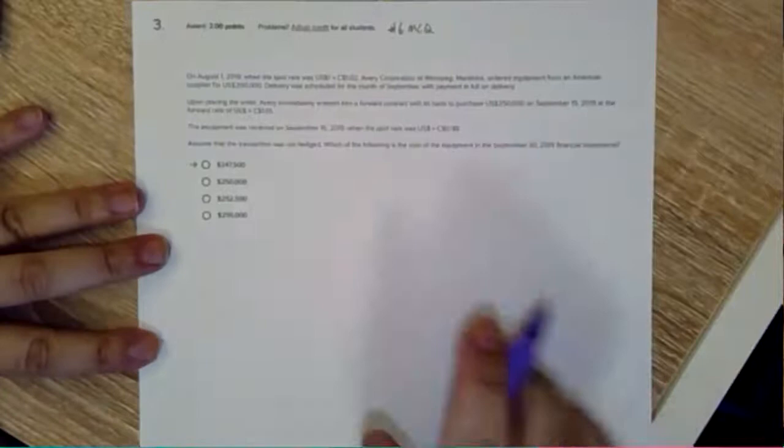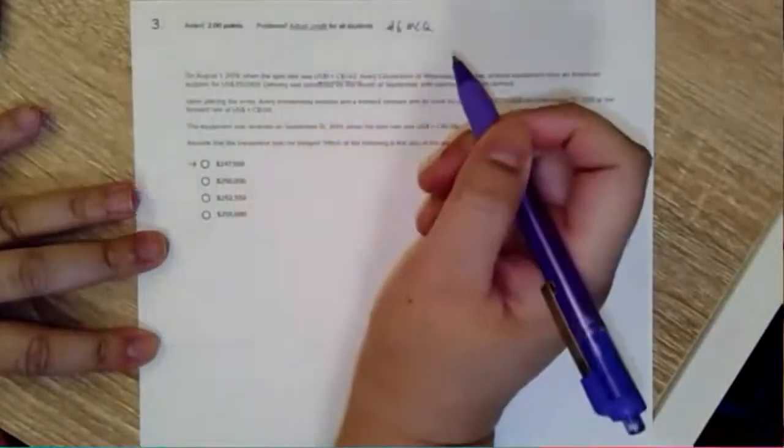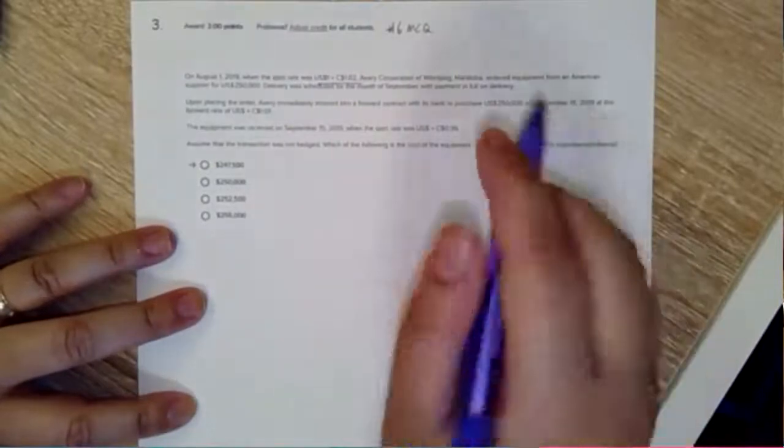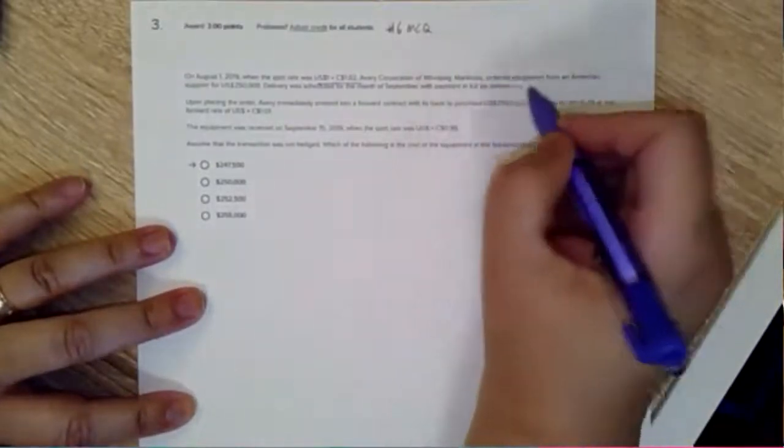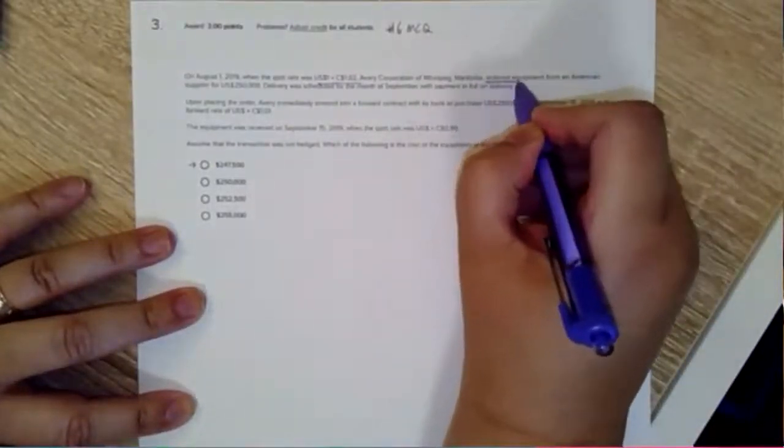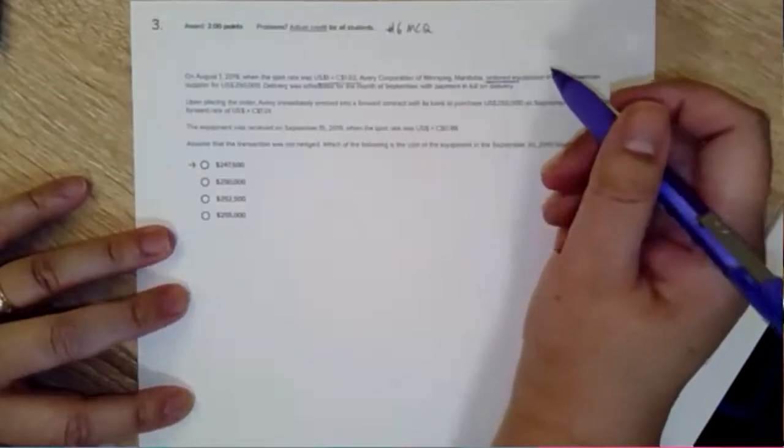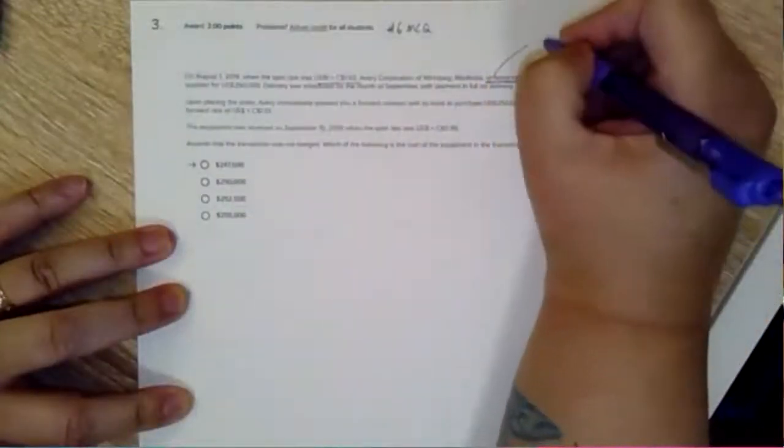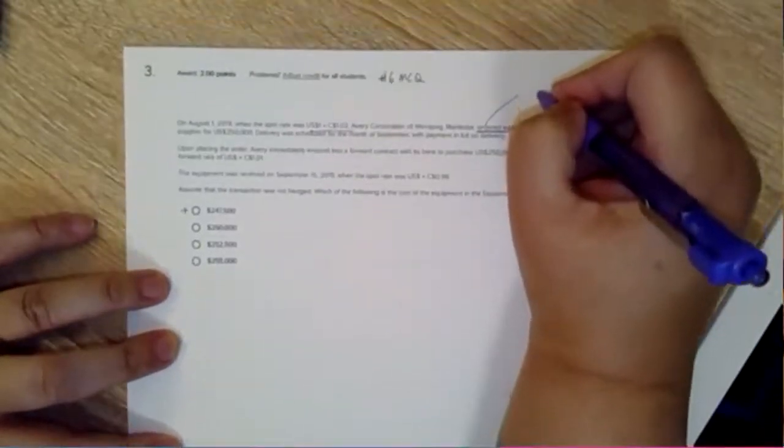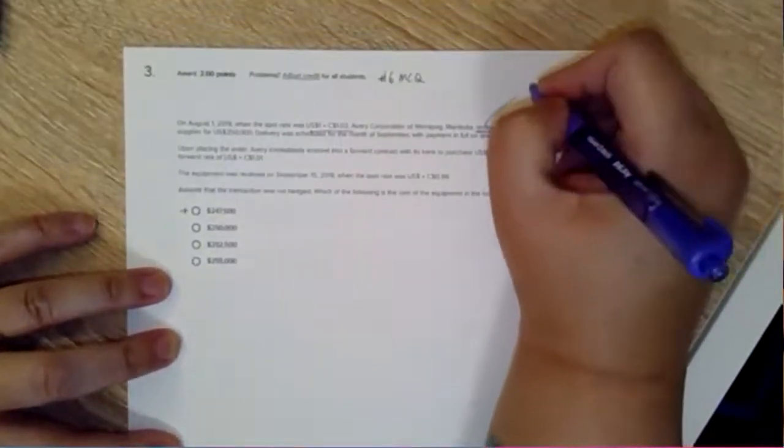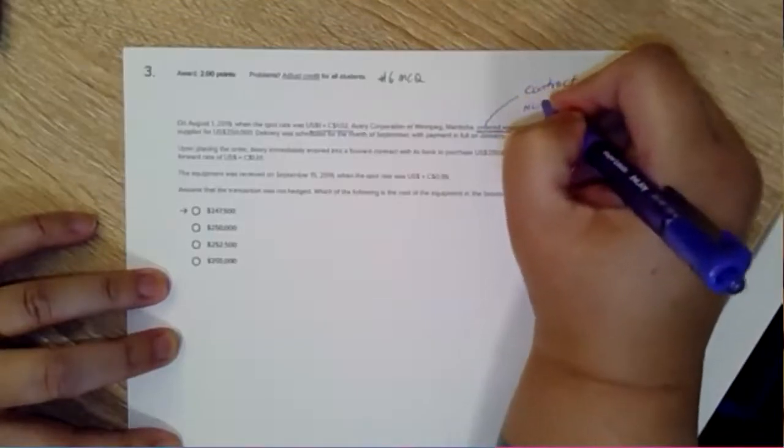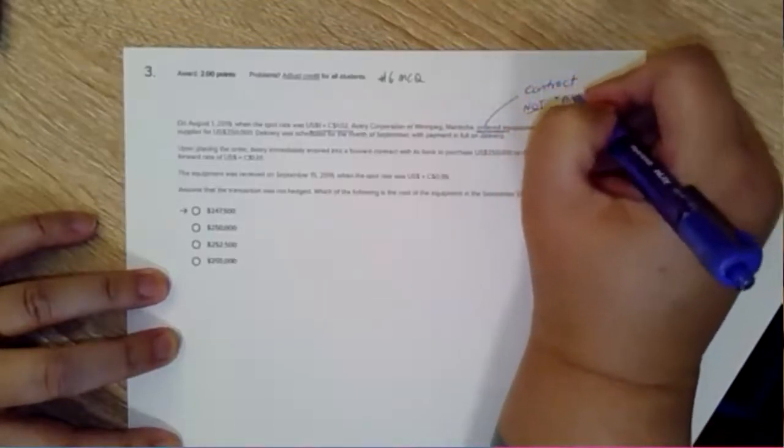In August 2019, spot rate was US one dollar to Canadian 1.02. Avery Corporation ordered equipment, so didn't purchase. That means we're assuming it was a contract because it wasn't purchased.